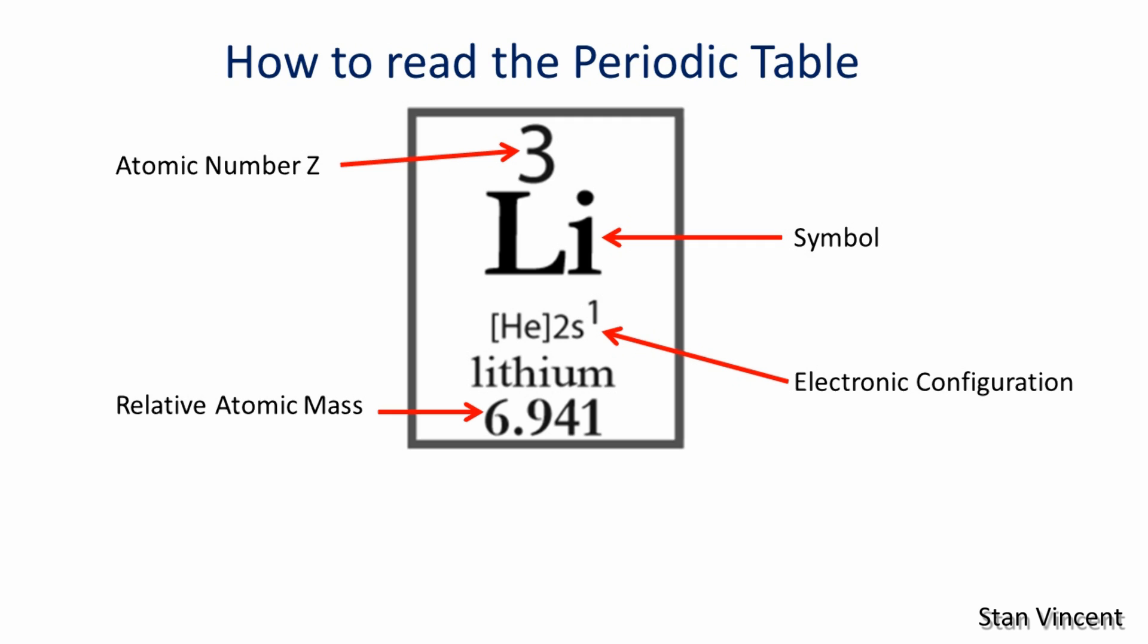So these are the four important aspects you can read from the periodic table: the atomic number represented by the letter Z, the symbol of the element, the electronic configuration, and the relative atomic mass which is expressed in grams when you determine the molar masses. That's it for now. Please don't forget to rate, comment, and subscribe. Thank you and have a good day.